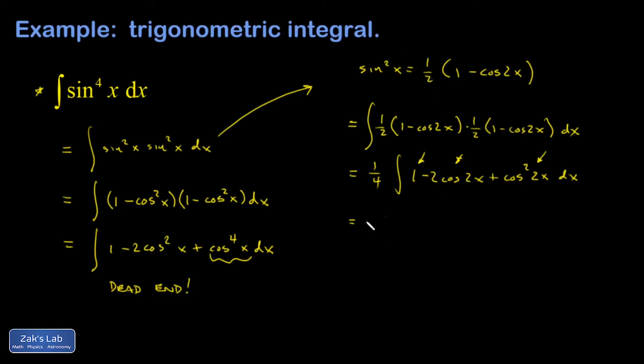So I'm going to use the related identity to this one. That cosine squared x is 1 half times 1 plus cosine 2x.